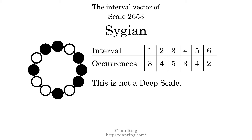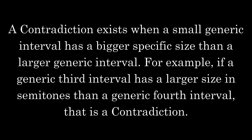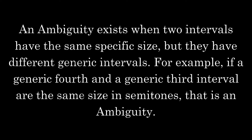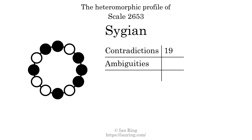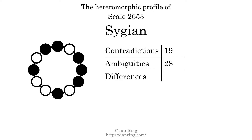Heteromorphisms are comparisons between every interval in a set. They can be classified as contradictions, ambiguities, and differences. A contradiction exists when a small generic interval has a bigger specific size than a larger generic interval — for example, if a generic third interval has a larger size in semitones than a generic fourth interval, that is a contradiction. The number of contradictions in this scale is 19. An ambiguity exists when two intervals have the same specific size but different generic intervals. The number of ambiguities in this scale is 28. A difference exists when two intervals have the same generic size but different specific sizes — for example, a major third and a minor third. The number of differences in this scale is 92.